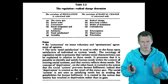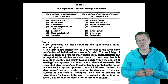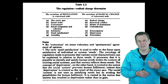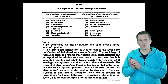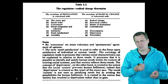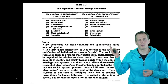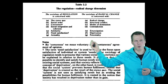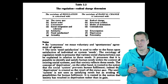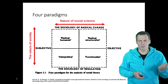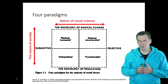Burrell and Morgan put together the nature of society dimension into a table. Regulation is explained by focusing on the status quo — it is mostly value-free and focuses on societies in general. The sociology of radical change is more focused on conflict: why are some people dissatisfied, what causes dissatisfaction, how can we address it, and how can we change society for the better? It is more focused on what ought to be and what could be, while regulation is more focused on what is. This gives us four perspectives: functionalist, interpretive, radical humanist, and radical structuralist.